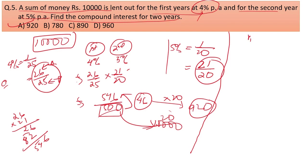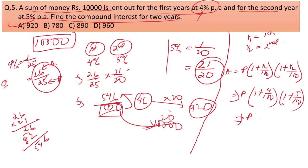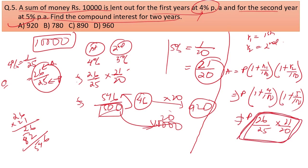This approach works because the compound interest formula for two different annual rates is: Amount = P × (1 + R1/100) × (1 + R2/100). With R1 = 4% and R2 = 5%, that gives P × (26/25) × (21/20), which is why I use 26/25 and 21/20 as the ratio shortcut in the calculation.